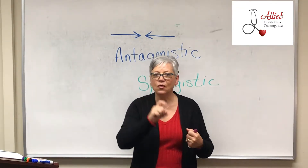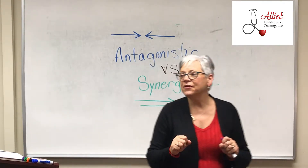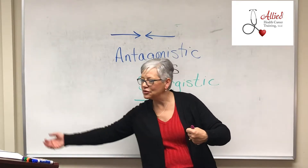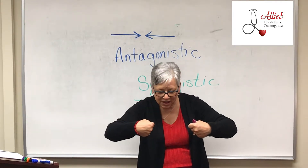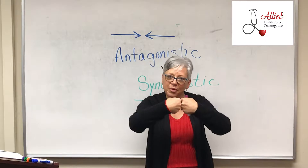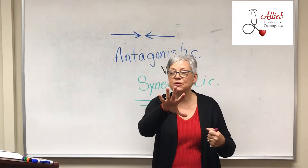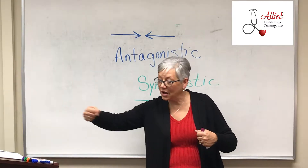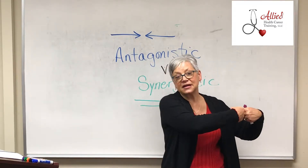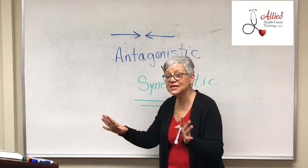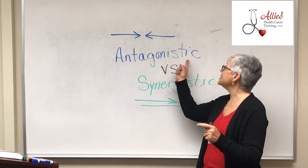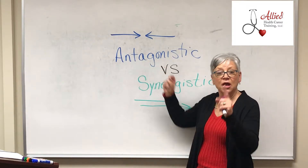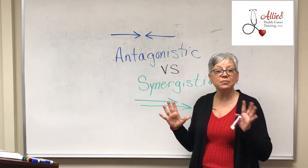An example of antagonistic meds might be if you're taking vitamin K, which clots the blood, and then you're taking Coumadin, which thins the blood — they're opposing each other. Now sometimes we do that on purpose; if somebody has taken way too much Coumadin, we might give them some vitamin K to counteract it. But you just have to be aware that antagonistic meds are meds that oppose each other.